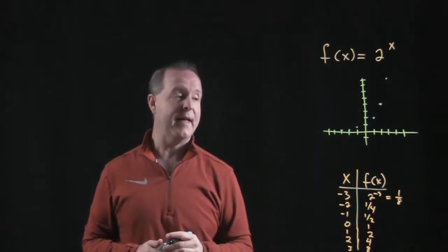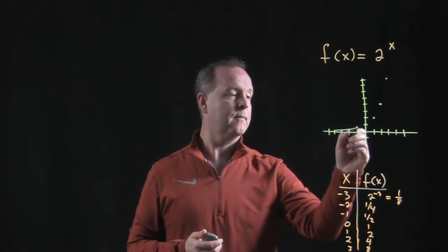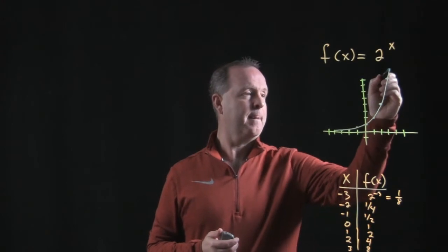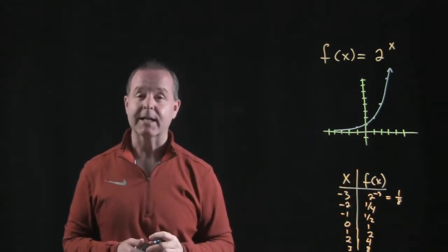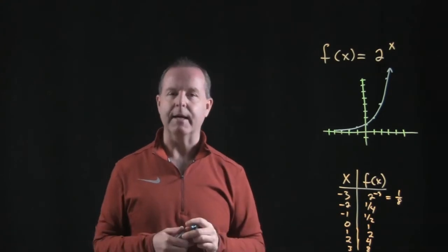And if we were to graph that in a nice, smooth, continuous line, I get an exponential graph looking like that. And I refer to it as an airplane taking off.